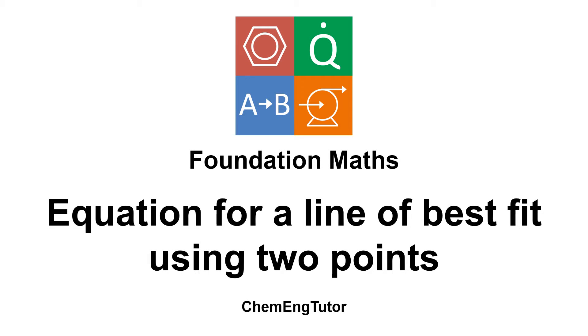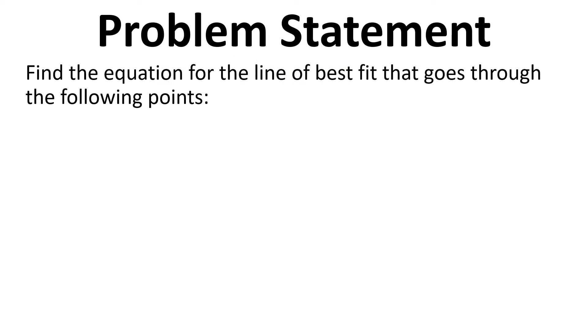In this video I'll show you how to find the equation for a line of best fit using two points. Here's the problem statement. We need to find the equation for a line of best fit that goes through the following points. Point 1, x equals 5 and y equals 2. Point 2, x equals 9 and y equals 8.